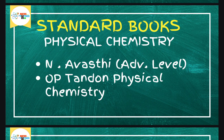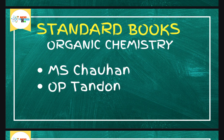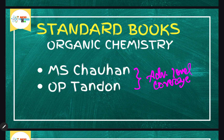For Physical Chemistry, you can go for Narendra Awasthi's Physical Chemistry, available on Amazon and Flipkart. Another option is OP Tandon's Physical Chemistry — both provide address-level coverage. I have studied both of them, so you can go for either one. For Organic Chemistry, you have two options: MS Chouhan and OP Tandon, and both provide advanced level coverage. Follow these along with NCERT.